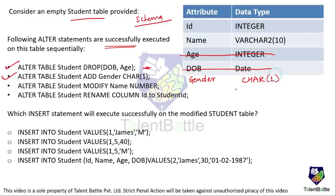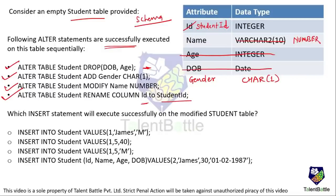Third ALTER statement: ALTER TABLE student MODIFY name to data type NUMBER — the name attribute's data type is changed to NUMBER. Fourth: ALTER TABLE student RENAME COLUMN id TO student_id — the id column is renamed to student_id. All four alterations are successfully executed and the schema is now modified.